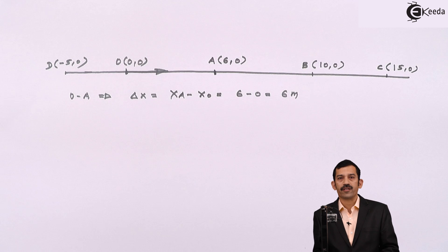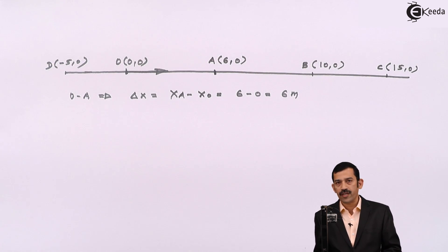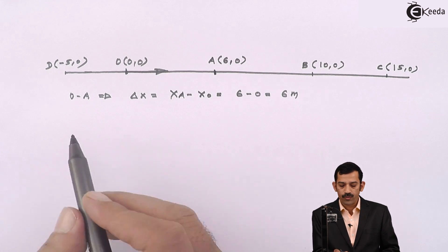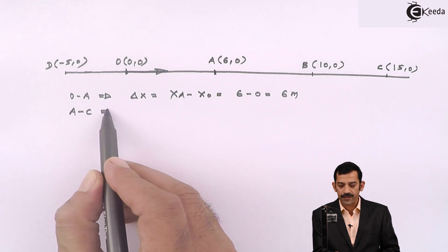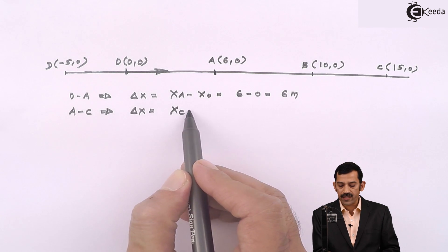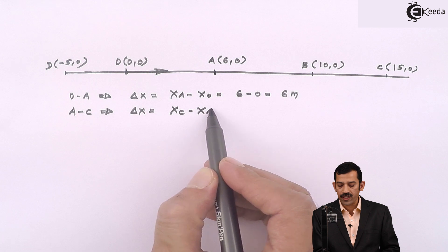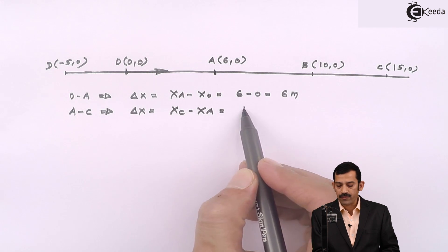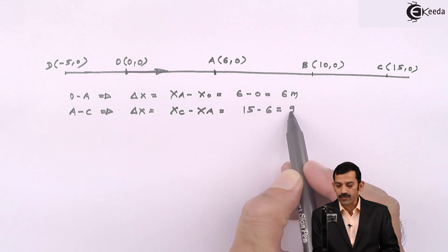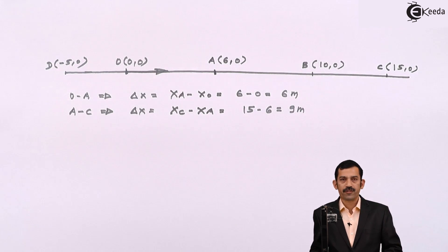Displacement is always final position minus initial position. If we consider motion from A to C, then A becomes the initial position and C is the final position. Displacement = 15 − 6 = 9 meters. Displacement is simply final position minus initial position.